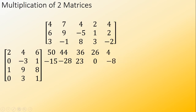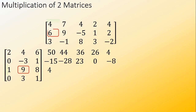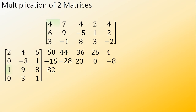Moving to the next row: 1 times 4 equals 4, 9 times 6 equals 54, 8 times 3 equals 24, and then adding them is equal to 82.